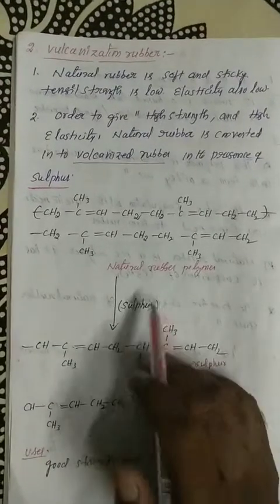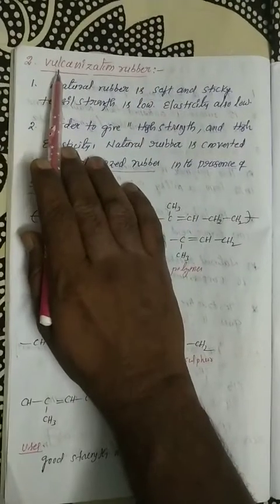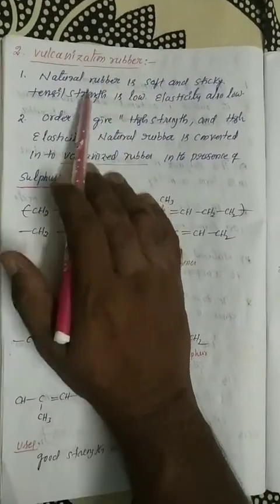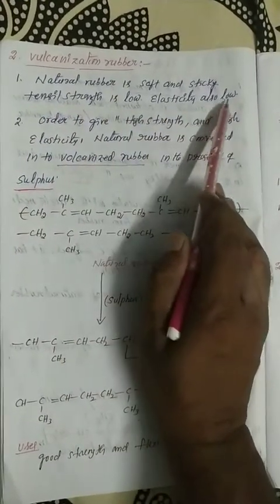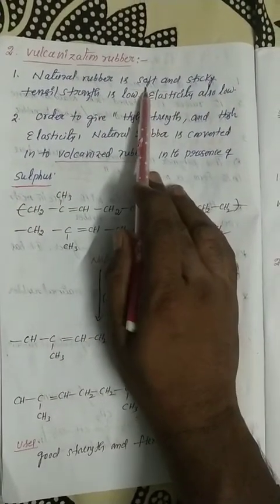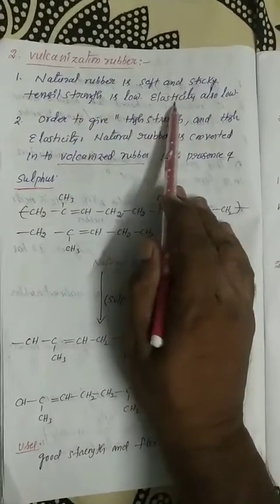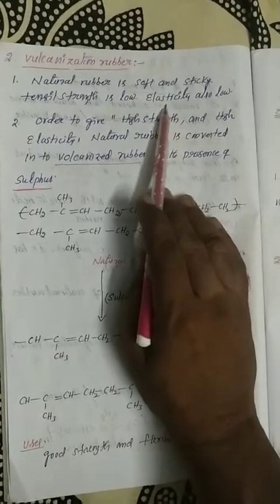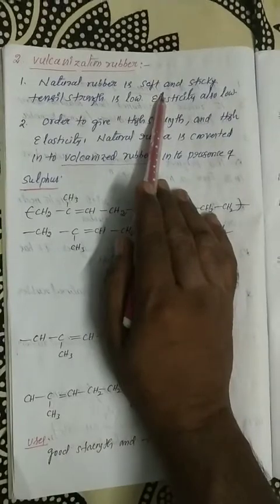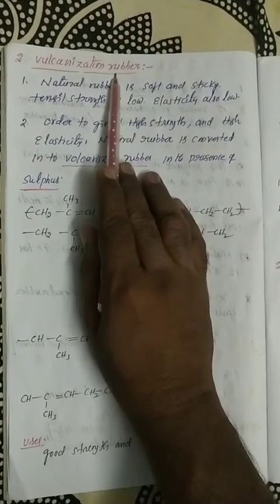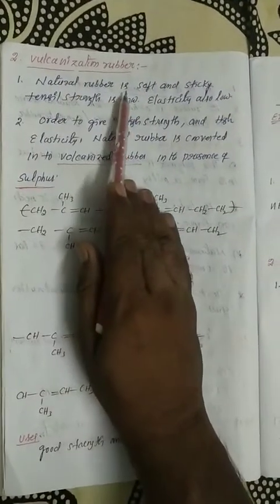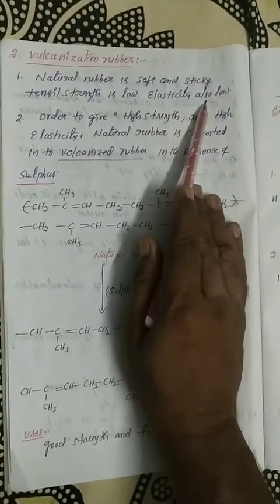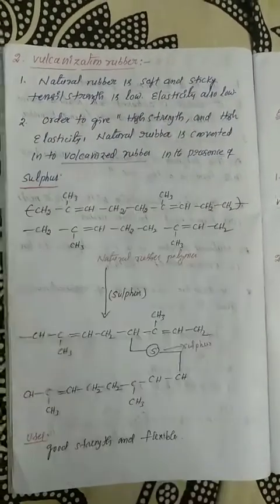The second category of rubber is vulcanized rubber. Natural rubber is soft and sticky, with very low tensile strength and very low elasticity. We want high elasticity, high tensile strength, and better strength. So scientists convert natural rubber into vulcanized rubber. The major difference is that vulcanized rubber has maximum elasticity and maximum tensile strength.